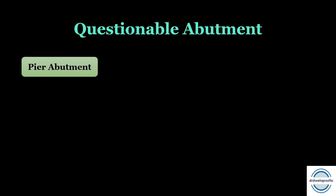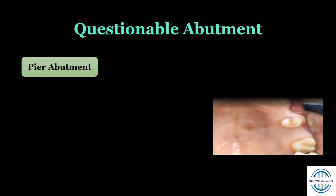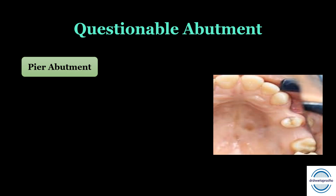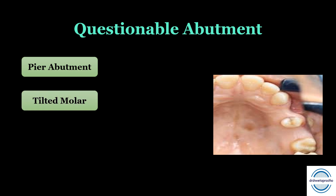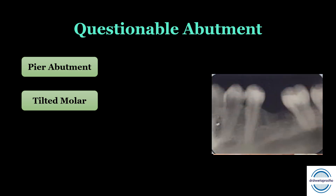After assessment of the abutment, there are certain questionable or challenging abutments that need special management. The first is the pier abutment — when the edentulous space is present on both sides of the tooth, creating a lone free-standing abutment, as we can see in the picture. Second are the tilted molars, which we will be discussing in detail in this video.